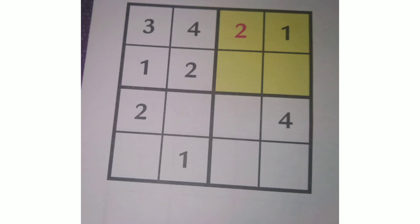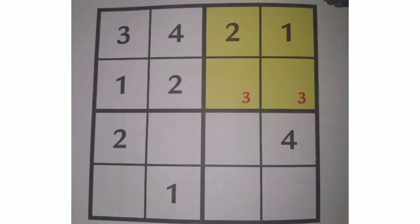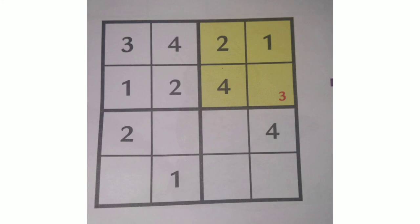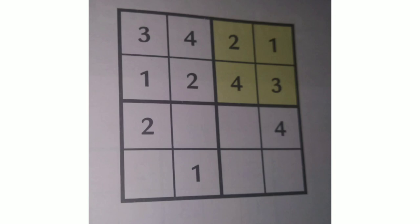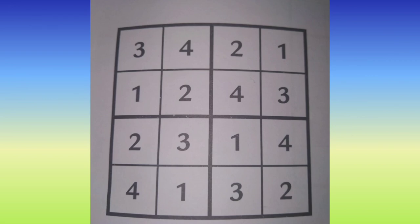Now we can focus on the second mini grid. In this mini grid, 2 and 1 are given and we have to find the position for elements 3 and 4. As you can observe, 3 can go in both boxes since neither column has 3 yet. So tentatively write 3 in both boxes and move on to the next element, which is 4. In the last column, 4 is already given, so 4 cannot come there. So in the second mini grid, 4 goes in the first column, and then we can fix the position of 3 in the second column. Like this, all elements are filled in the second mini grid.